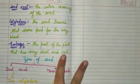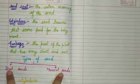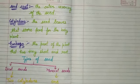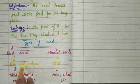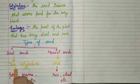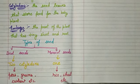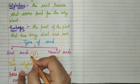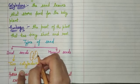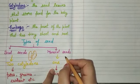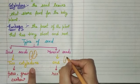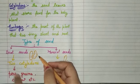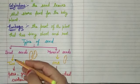Types of seeds: there are two types of seeds — dicot seeds and monocot seeds. Dicot seeds have two cotyledons. Monocot seeds have one cotyledon. Examples of dicot seeds are peas, gram, cashew, etc. We know that cashew has two parts and they can be separated.